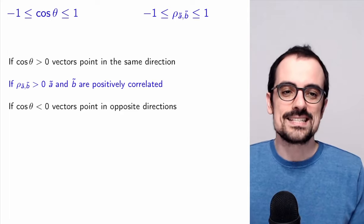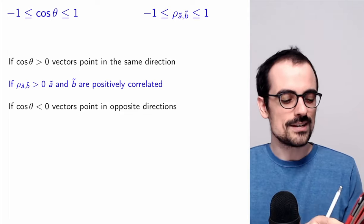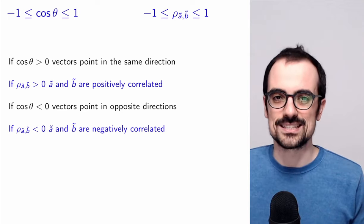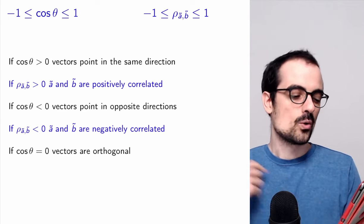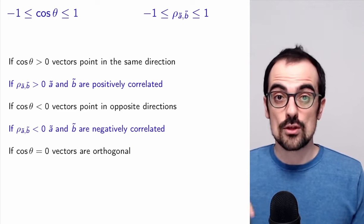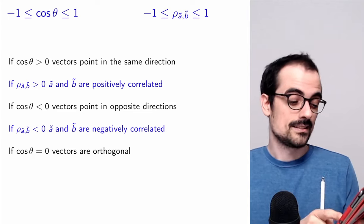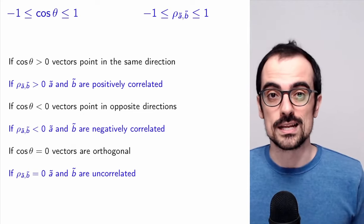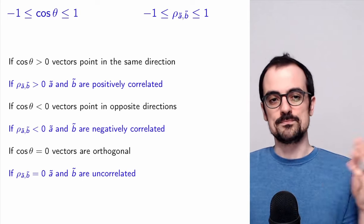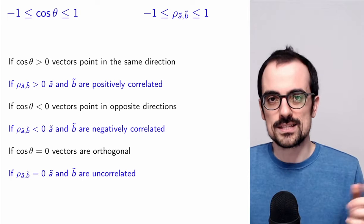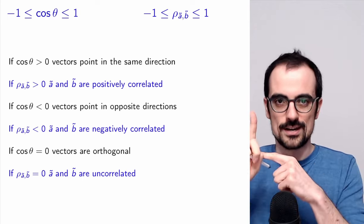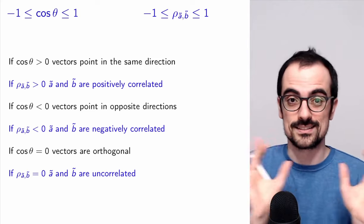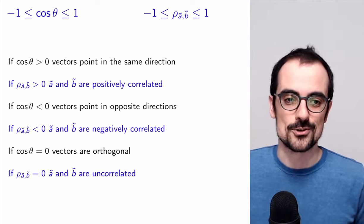When the cosine is negative, the vectors point in opposite directions — in our analogy, the random variables are negatively correlated. When the cosine is zero, the vectors are orthogonal, meaning A and B are uncorrelated — there is no linear dependence between them. Orthogonal vectors correspond to uncorrelated random variables; these two concepts are equivalent in the geometric analogy.